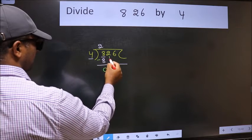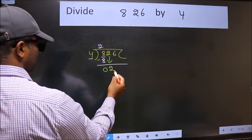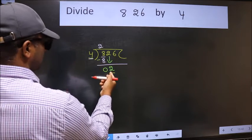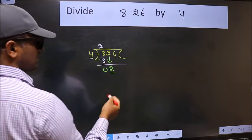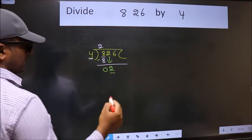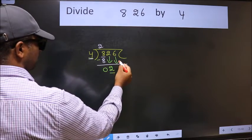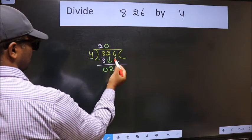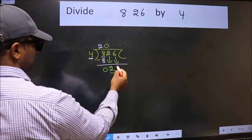After this, bring down the next number. So 2 down. Now here we have 2 and here 4. 2 is smaller than 4, so we should bring down the second number. And the rule to bring down the second number is we should put 0 here. Then only we can bring this number down.